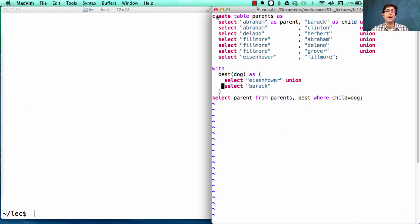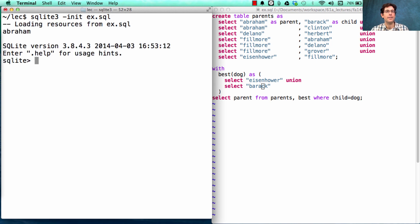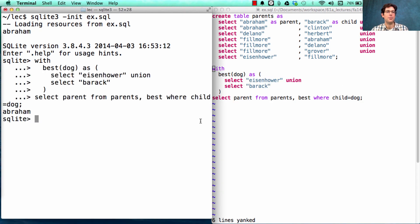So here, I've created the global table parents. I have a select statement with a with clause creating a local table, best, with a column called dog containing Eisenhower and Barack. If I start SQLite and initialize it with the contents of this example, it will print out Abraham, which is what this select statement evaluates to. A table with one row and that row is Abraham.